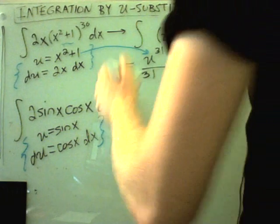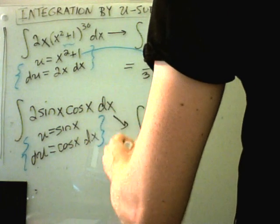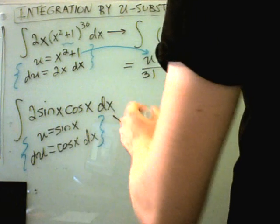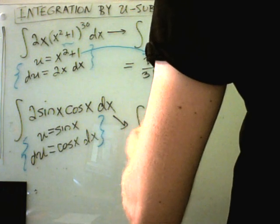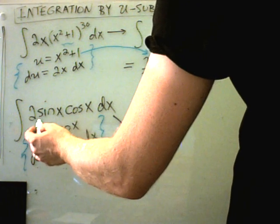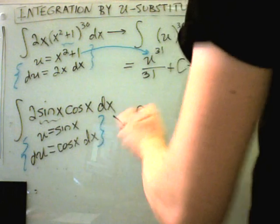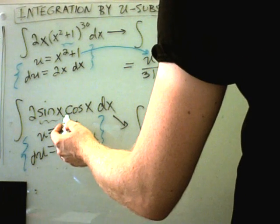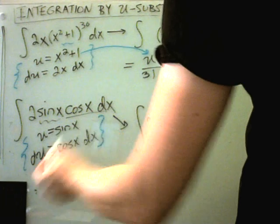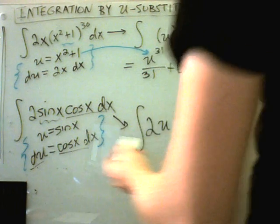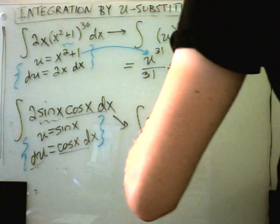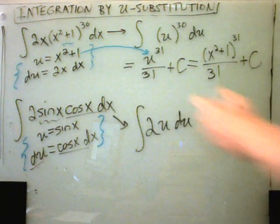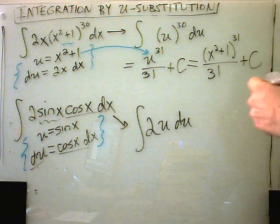So we're going to get, squeeze it in here. The 2 doesn't get affected by the u and the du, so the 2 is still there. Well, sine, that's what we're calling u, so that'll be 2u. And cosine of x, dx, is all being replaced by the du. So cosine of x, dx is equivalent to du. I'll replace that with a du. And this is something I know how to find the antiderivative of again.